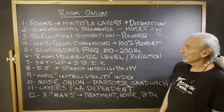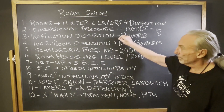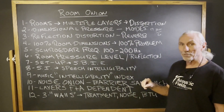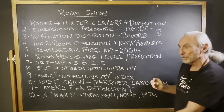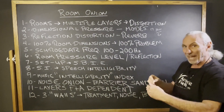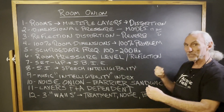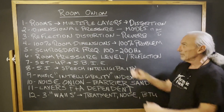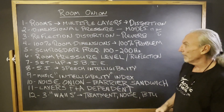So the bottom line here is room dimensions, reflections, and then even inside the room, we have this break point. It's called the Schroeder frequency, where the pressure subsides — that 100 to 200 hertz range — and then it turns into reflections. So there are break points within the room: more layers, more distortion.